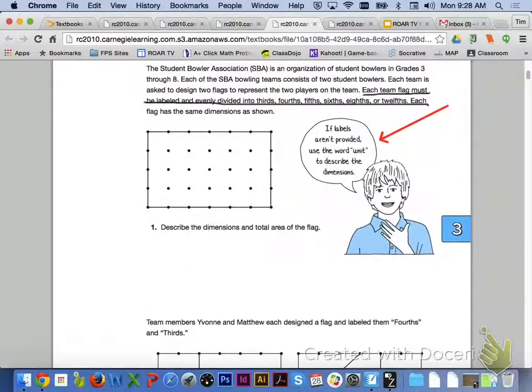If we look at the top of page 97 to get started today, the Student Bowler Association, or the SBA, is an organization of student bowlers in grades 3 through 8. Each of the SBA bowling teams consists of two student bowlers. Each team is asked to design two flags to represent the two players on the team. Each team flag must be labeled and evenly divided into thirds, fourths, fifths, sixths, eighths, or twelfths.